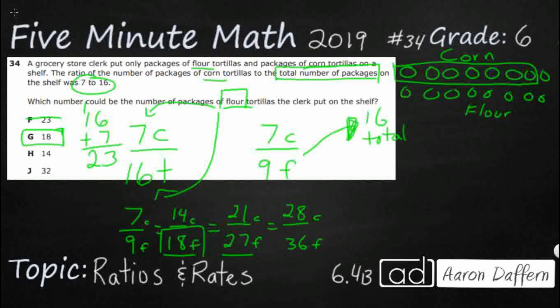Now the tricky part is this 14 and this 32. If we were to take our original ratio here of 7 corn to 16 total, if we were to make an equivalent fraction by doubling the 7 and 16, guess what we would get? We would get 14 and we would get 32. We would get this one and we would get this one. And we don't need either of them because neither of them is flour. We need the flour down here. So our answer is G.